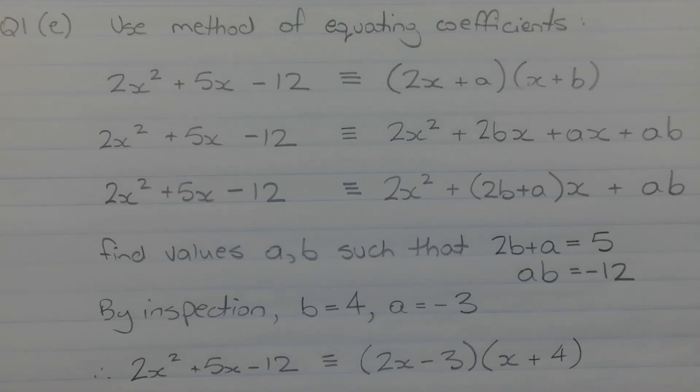And we get that by applying the extended distributive law. So 2x times x is 2x squared, 2x times b is 2bx, a times x is ax, and a times b is ab.